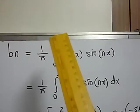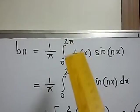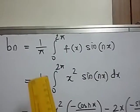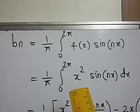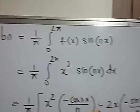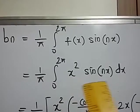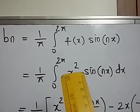Next is to calculate bₙ. It is 1 by π integral 0 to 2π f(x) sin(nx) dx. 1 by π integral 0 to 2π. What is f(x)? It is x² sin(nx). Once again I will be using u into v rule where u is x raise to 2.